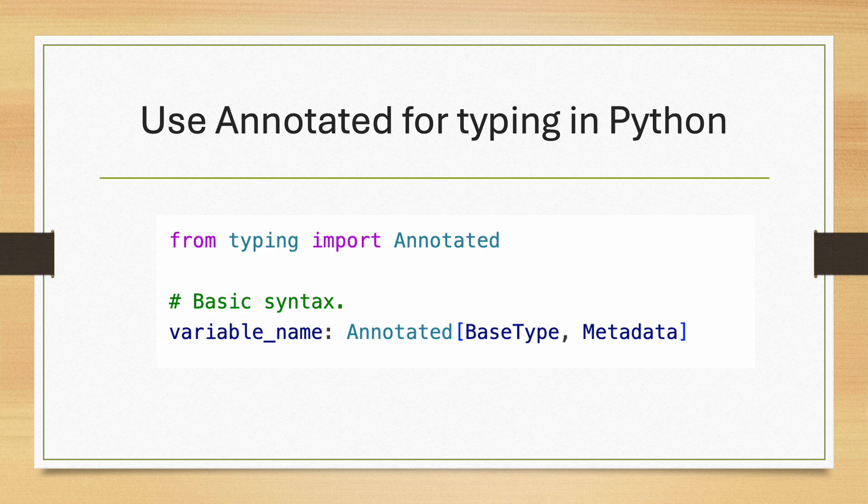We will give two examples of how to use Annotated in Pydantic and FastAPI, two extremely popular Python libraries for validating data and building APIs, respectively.